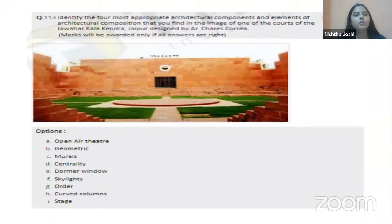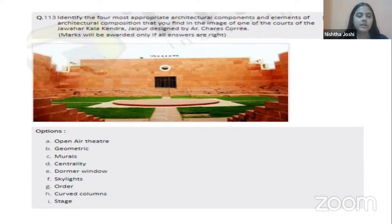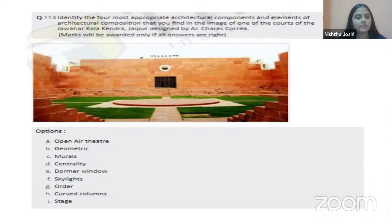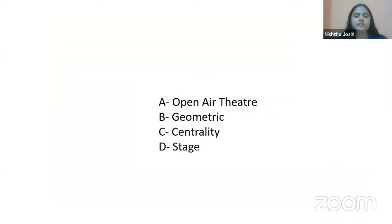Identify four most appropriate architectural components in the image of one of the courts of the Jawahar Kala Kendra in Jaipur, a very famous building by architect Charles Correa. The options include open air theater, geometric, mural, centrality, dormer window, skylight, order, curved column, and stage. From the image, we can see an open air theater and a stage at the center. The four correct options are: open air theater, use of geometric shapes, centrality, and stage.